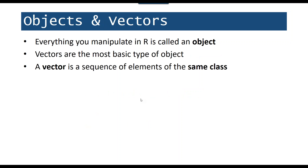I've been throwing around the term 'vector' a lot — what does that mean? Whenever you pull something into R you're creating an object and manipulating that object. Vectors are the most basic type of object. Think about an Excel spreadsheet: column A might be titles, column B the last date checked out, column C the total number of checkouts. In column A everything is the same type — it's all characters, even if one title is '1984' because you won't be doing mathematical operations on it. Everything in column B is a date, everything in column C is a number you can do math on. You can think of columns A, B, and C each as vectors — a sequence of elements of the same class.